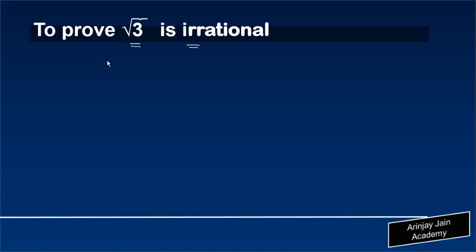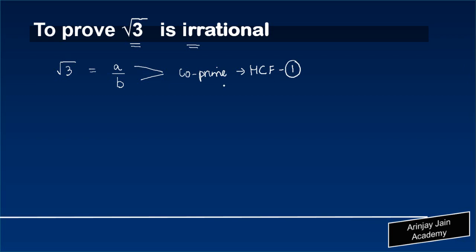In this video we are going to prove that square root of 3 is an irrational number. Let's assume to the contrary that root 3 is actually a rational number, which means that root 3 can be written as a upon b, where a and b are co-prime, meaning that their highest common factor is 1, and b is not equal to 0. So if we can prove that there is actually another common factor of a and b in addition to 1, then root 3 is an irrational number.